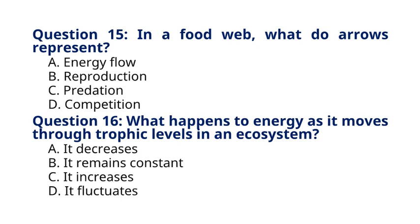Question 16. What happens to energy as it moves through trophic levels in an ecosystem? A. It decreases. B. It remains constant. C. It increases. D. It fluctuates. The correct answer to question 16 is option A, It decreases. Explanation: Energy decreases as it moves through trophic levels due to energy loss at each level through respiration, heat, and waste production.